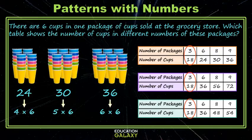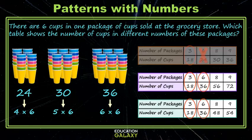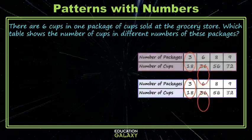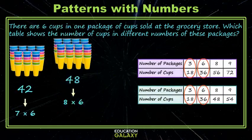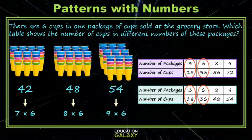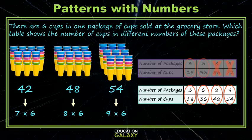Now, how many cups should we have? When we have six packages, we should have 36 cups. That works for two of our tables, but not the first one, so it's out. Lastly, we need to know what happens at eight and nine packages. Continuing from six to seven, eight, and nine packages, we end up with 48 and 54 cups, which matches our bottom table but not our top table. And we're all done. Now it's your turn to practice patterns.